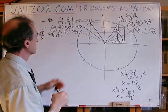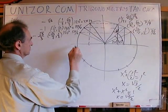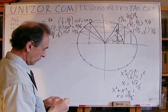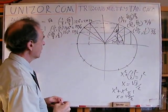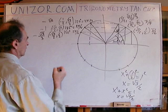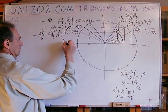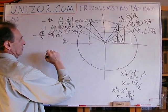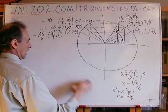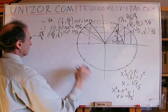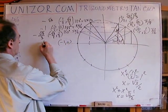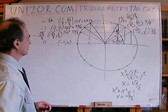Next is π, which is 180 degrees. Since the ordinate is equal to 0 and the abscissa is equal to −1, the tangent is equal to 0.